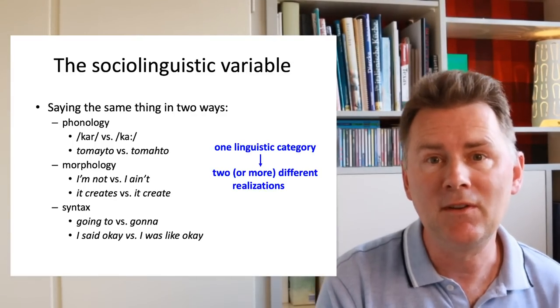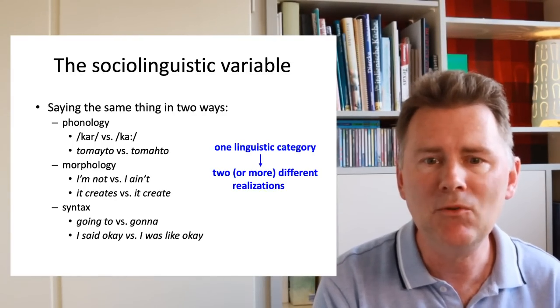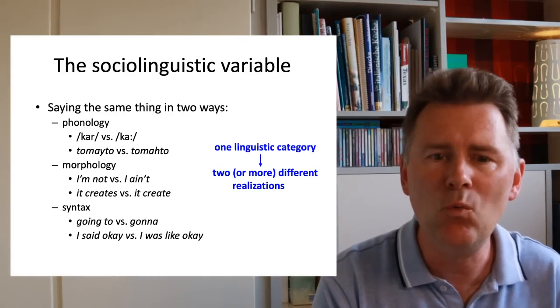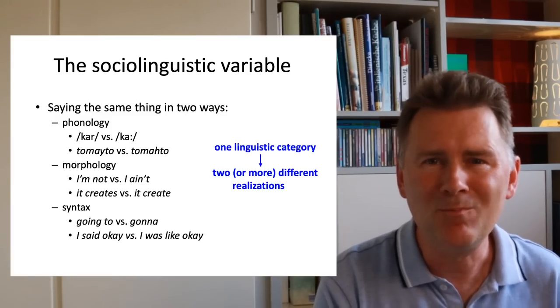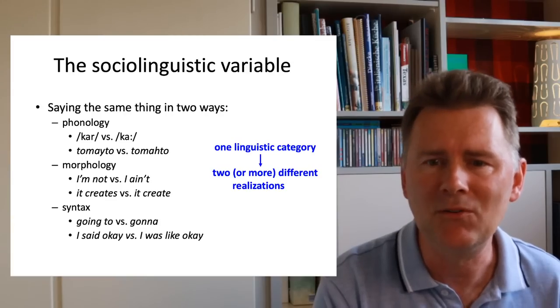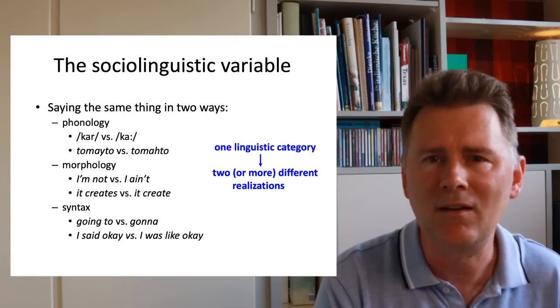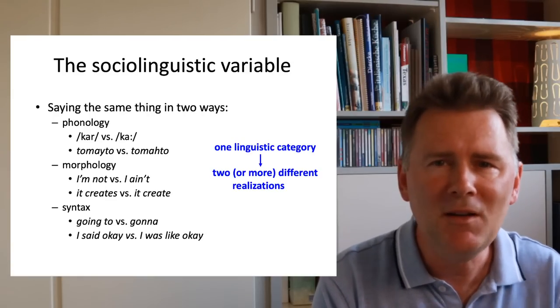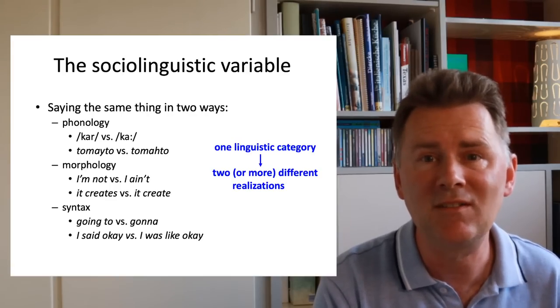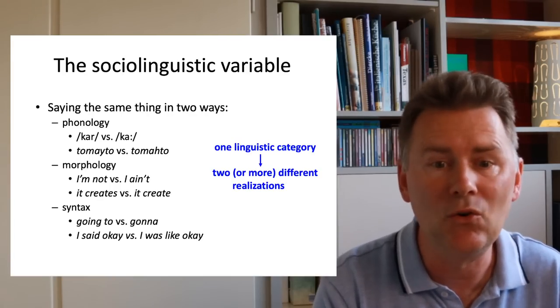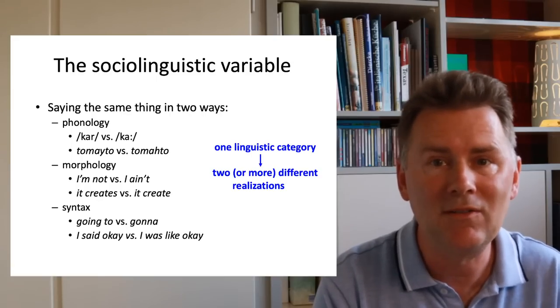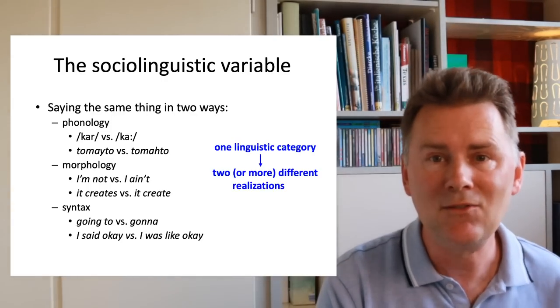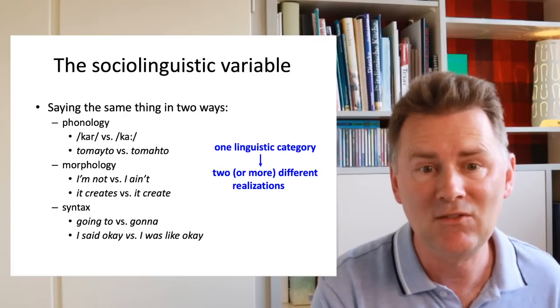Basically, a sociolinguistic variable is a linguistic category that can be realized in two or more different ways. Informally speaking, we have two ways of saying the same thing. Now, what is socio about sociolinguistic variables? Well, typically, the social context determines whether speakers choose one thing or the other. That means that language variation is to a large extent driven by social factors such as your age or your gender, your sexual orientation or your general outlook on life.